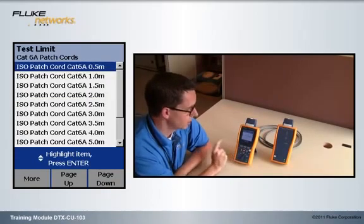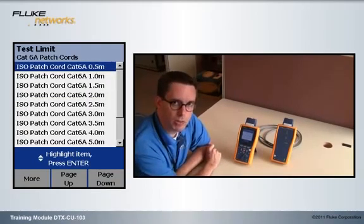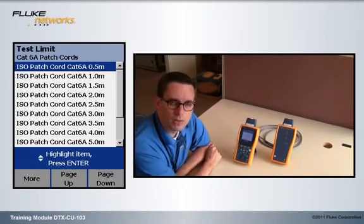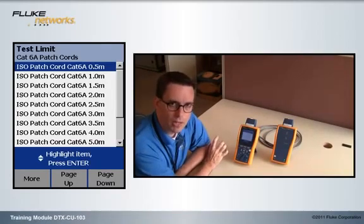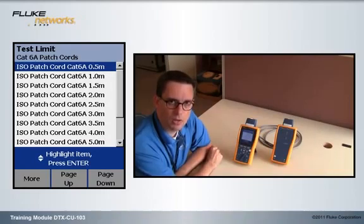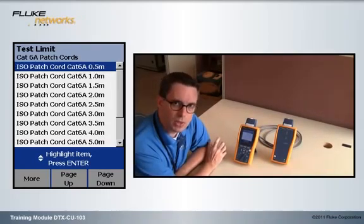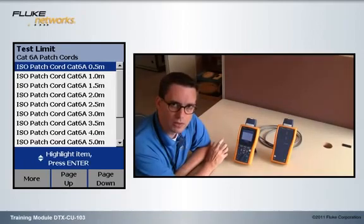Hit the enter key. Now, this is where we're going to pause for a moment. You're not going to get a TIA option for testing CAT6A patch cords. With 5E and 6, the TIA and ISO standards are aligned. With 6A, they're not. The ISO 6A connecting hardware is a little bit more strict than the TIA CAT6A connecting hardware.